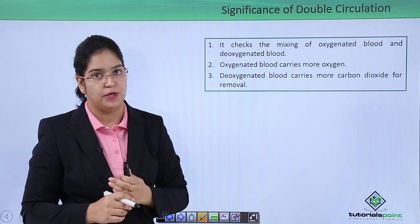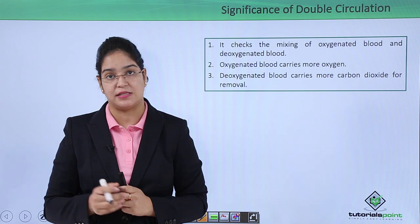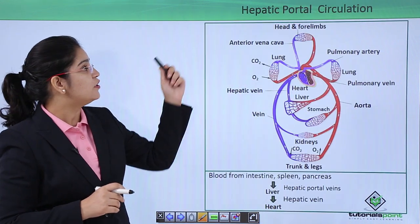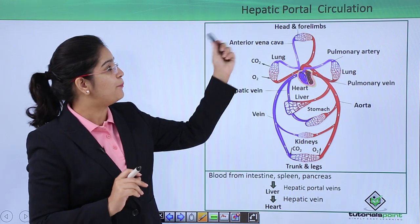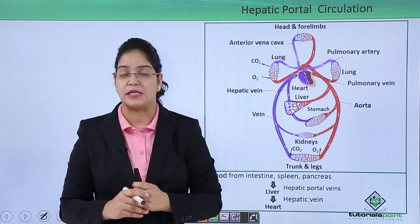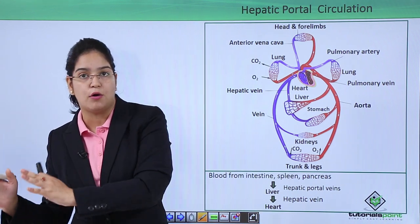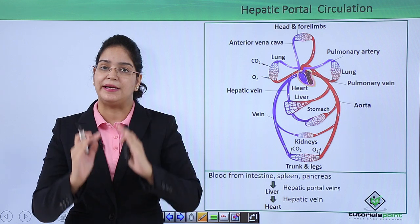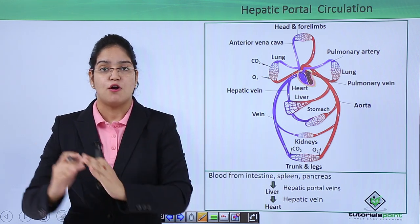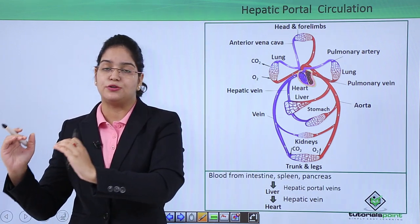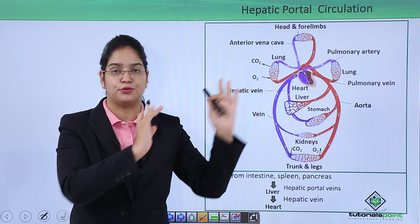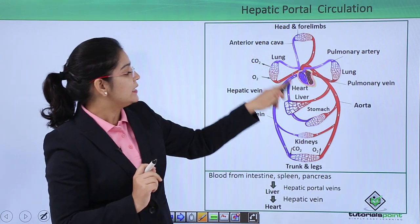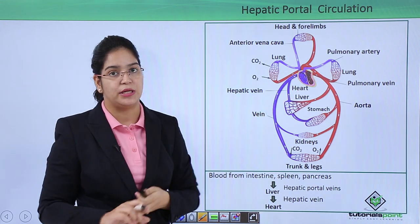There are also special types of circulatory systems in our body: hepatic portal circulation and coronary circulation. In normal circulation, veins carry deoxygenated blood from an organ directly to the heart. But in portal circulation, blood first goes to an intermediate organ and then to the heart. When this intermediate organ is the liver, it is called hepatic portal circulation.